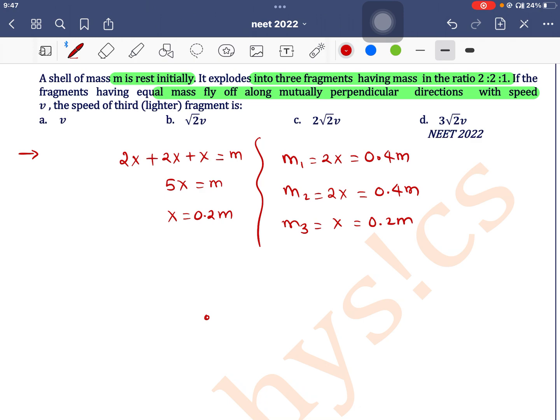Now, equal mass flies perpendicular to each other. This is m₁ and this is m₂. Now what is the velocity of the third fragment? According to law of conservation of momentum...